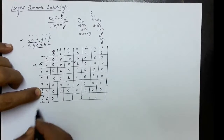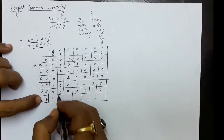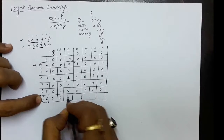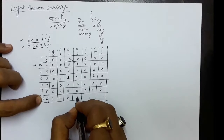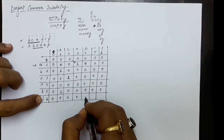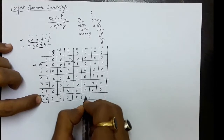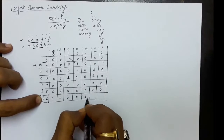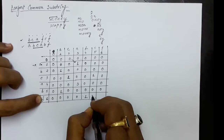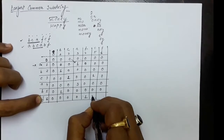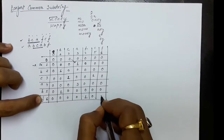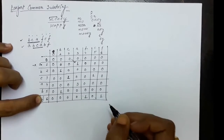For F: F and B — no match; F and C — no match; F and A — no match; F and F — match, diagonal value plus 1. F and C — no match. F and F — match, diagonal value plus 1.